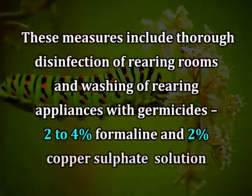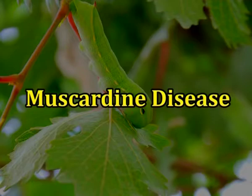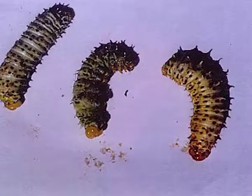Methods to eliminate pebrine disease: The disease can be eliminated through appropriate measures. These include thorough disinfection of rearing rooms and washing of rearing appliances with germicides such as 2 to 4 percent formalin and 2 percent copper sulphate solution, and avoidance of contamination and accumulation of dirt in the rearing area. However, microscopical examination of moths and rejection of egg lots laid by diseased ones are the best ways to eliminate pebrine disease from a lot.